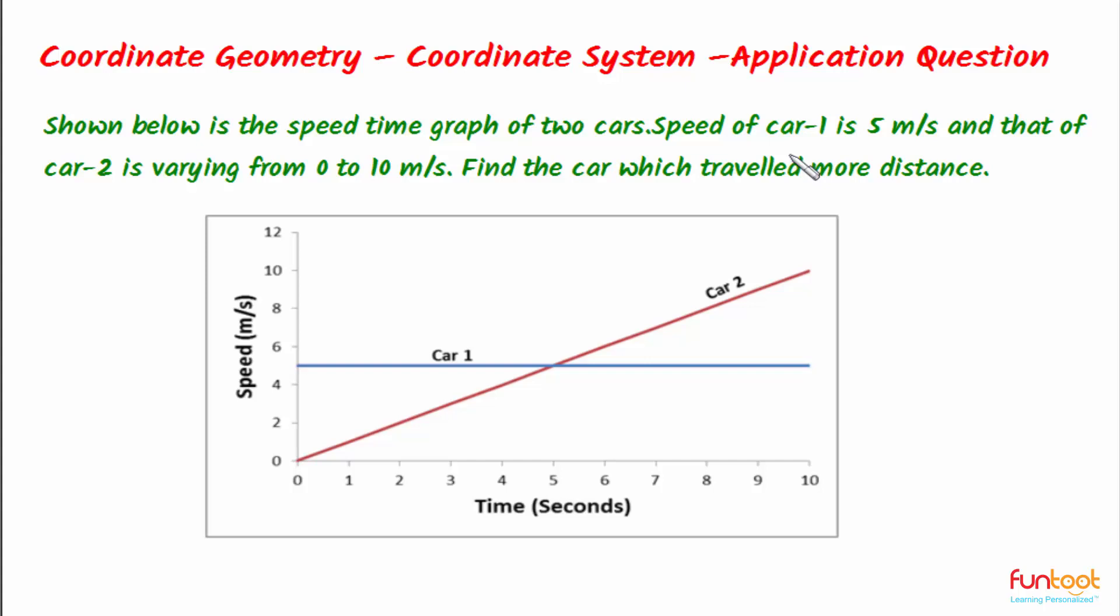Let's do a problem. Here is the speed time graph of two cars. Speed of car 1 is 5 meters per second and that of car 2 is varying from 0 to 10 meters per second. We have to find out which car travels more distance.